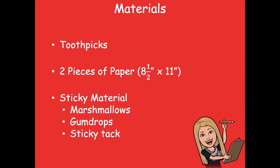The materials that you'll need for this lesson are some toothpicks, two pieces of paper — eight and a half by eleven, that's just a regular sheet of paper — and then some sort of sticky material. If you have mini marshmallows you can use those, or gumdrops, or maybe some sticky tack. That's going to help make your cube stand up as we actually build it. If you don't have those materials, just follow along and make sure you can talk about the attributes of the cube.